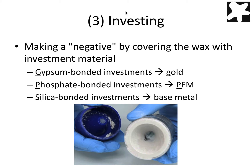The third step is investing. This is where we make a negative by covering the wax and sprue with investment material. The same process is done for making dentures. These investments are critical to know for the board exam. A gypsum bonded investment is used for making gold crowns — just remember G and G. Phosphate bonded investments are used for PFM crowns — remember P and P. And silica bonded investments are used for base metal crowns — base metal is the only one containing an S, matching the S of silica. Definitely remember those three for the board exam.